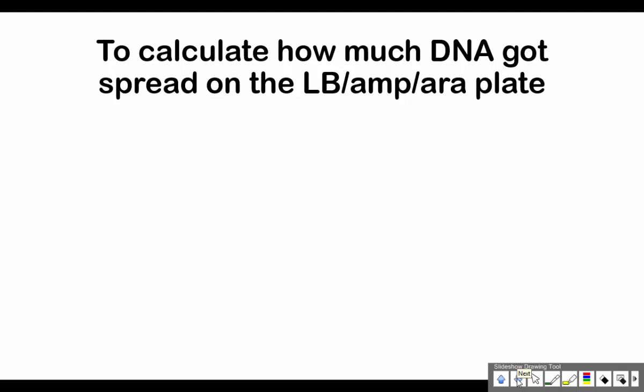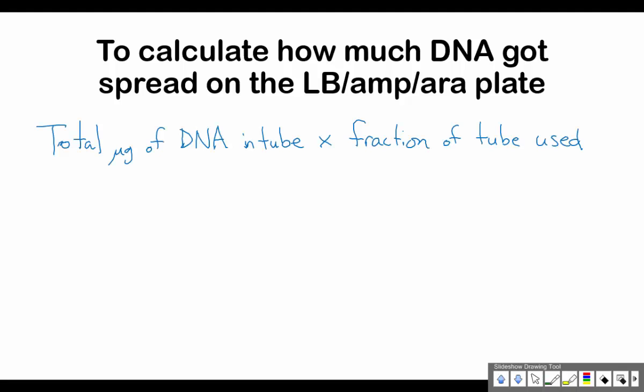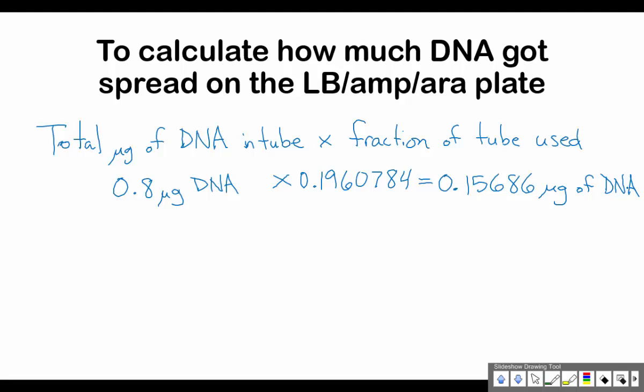Next we calculate how much DNA got spread onto the LB/AMP/ARA plate: the total micrograms of DNA in the tube times the fraction of the tube that we used. The total was 0.8 micrograms, and the fraction was 0.1960784. Doing that calculation gives us 0.15686 micrograms of DNA spread on the plate.